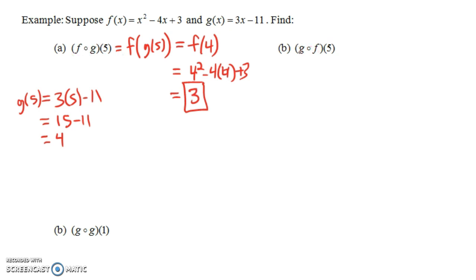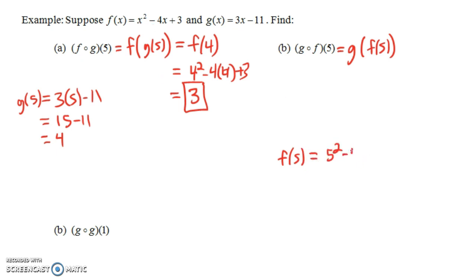Now we could compose the functions in the reverse order, where f is the inside function and g is the outside function. Instead of finding f circle g of 5, we're going to find g circle f of 5, which is g of f of 5. We need to find f of 5 first. Plugging into our formula for f: 5 squared minus 4 times 5 plus 3, that's 25 minus 20 plus 3. 25 minus 20 is 5, and 5 plus 3 is 8.